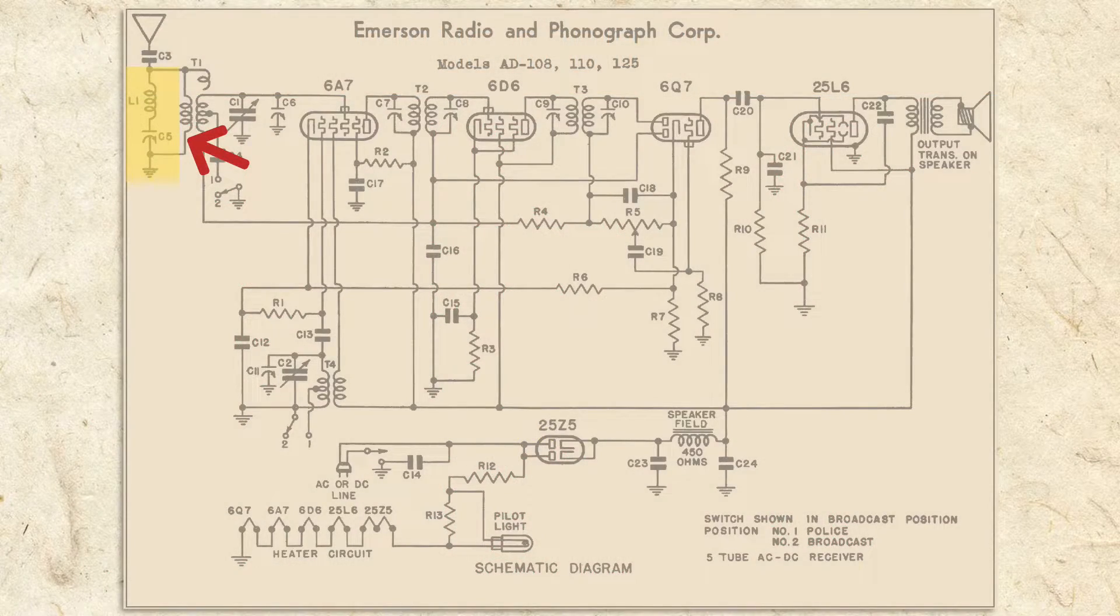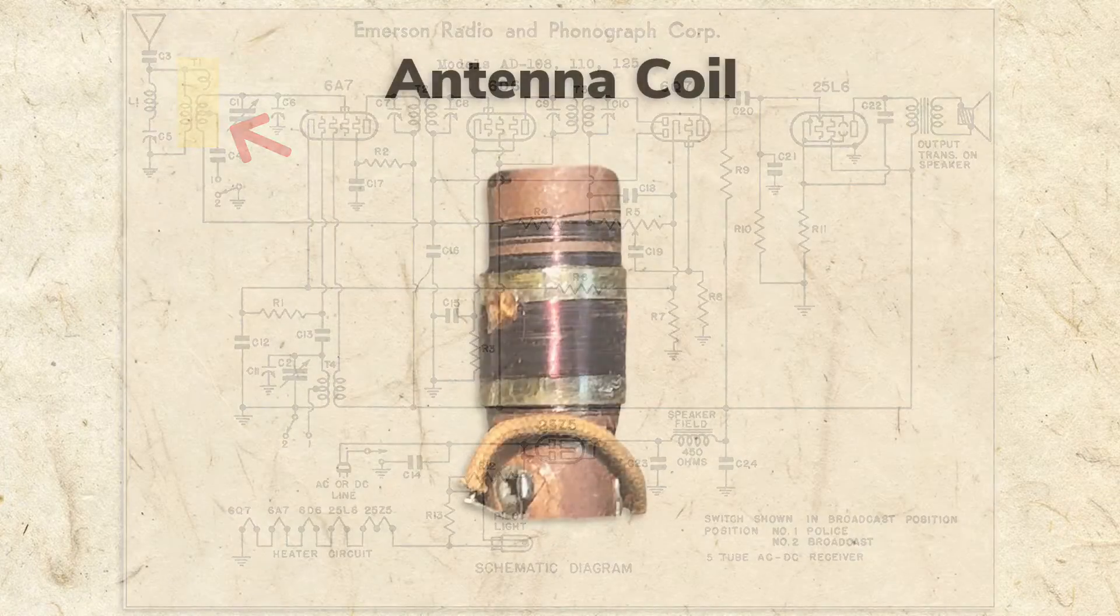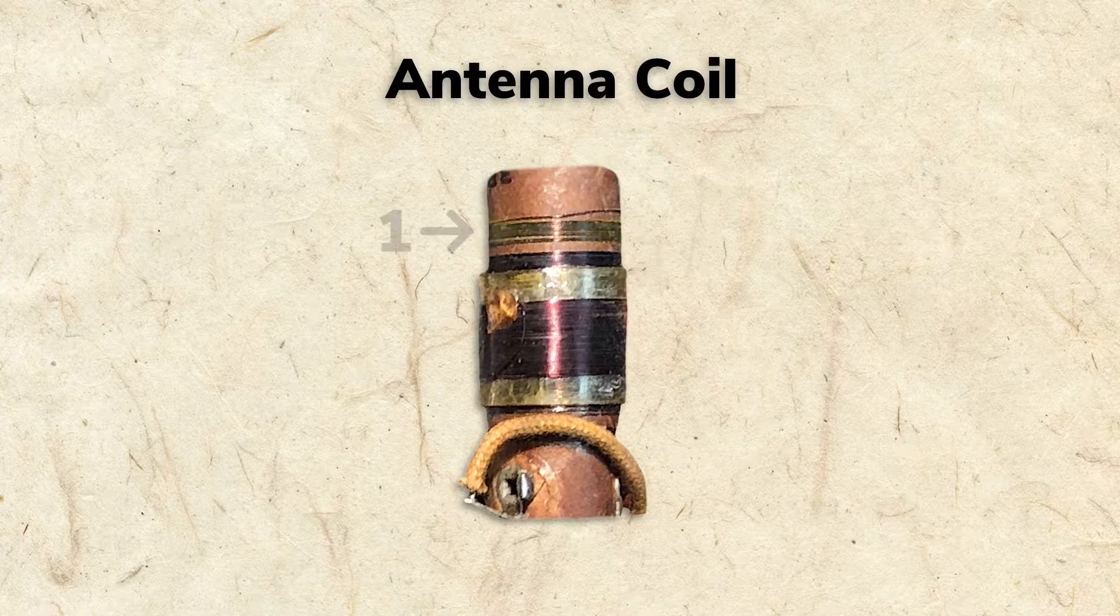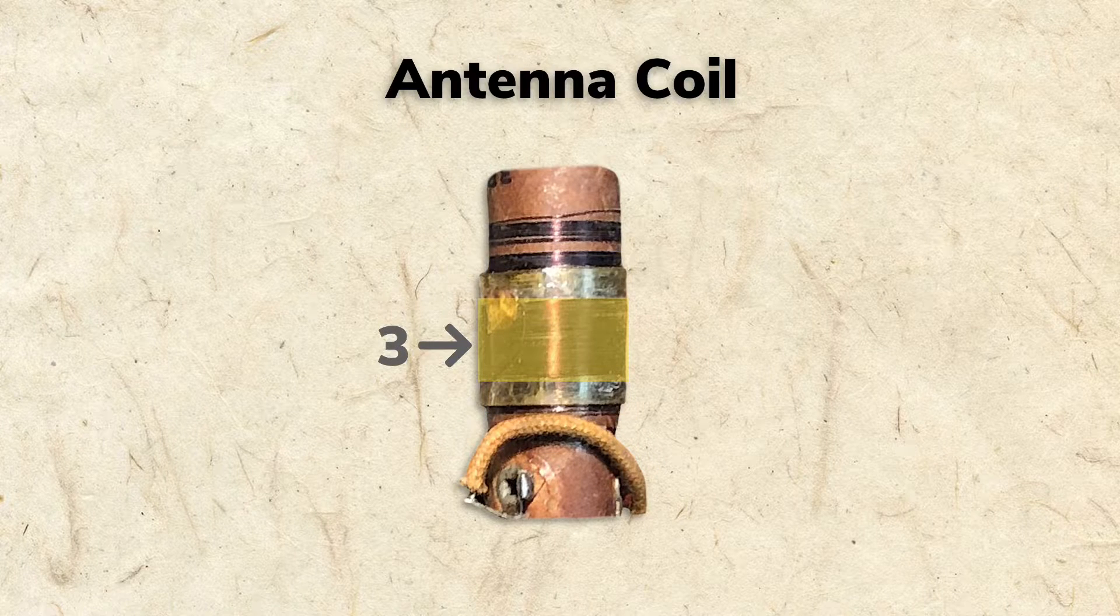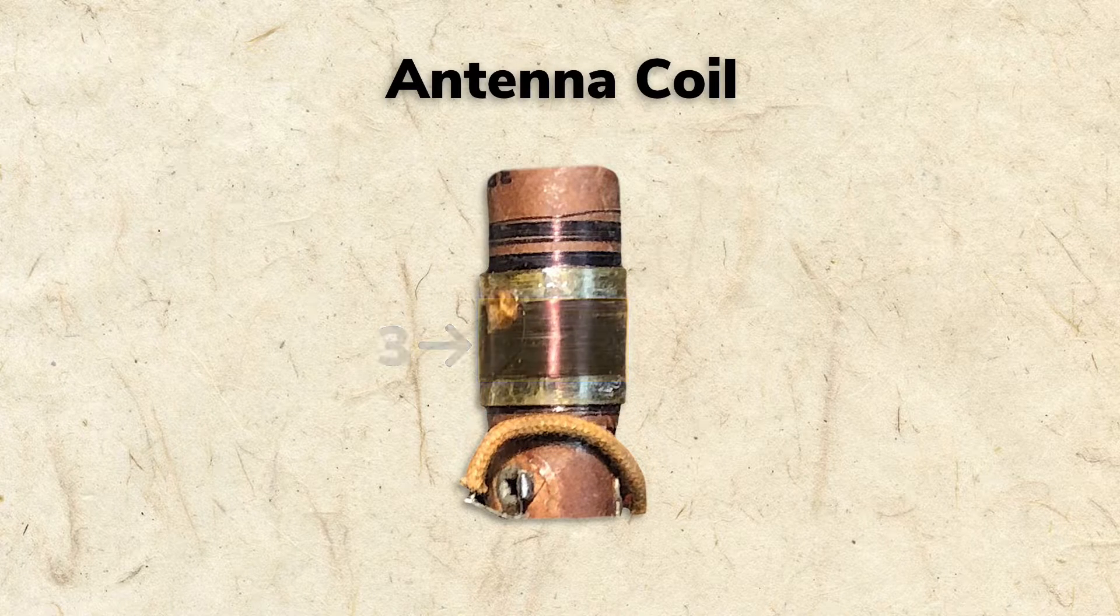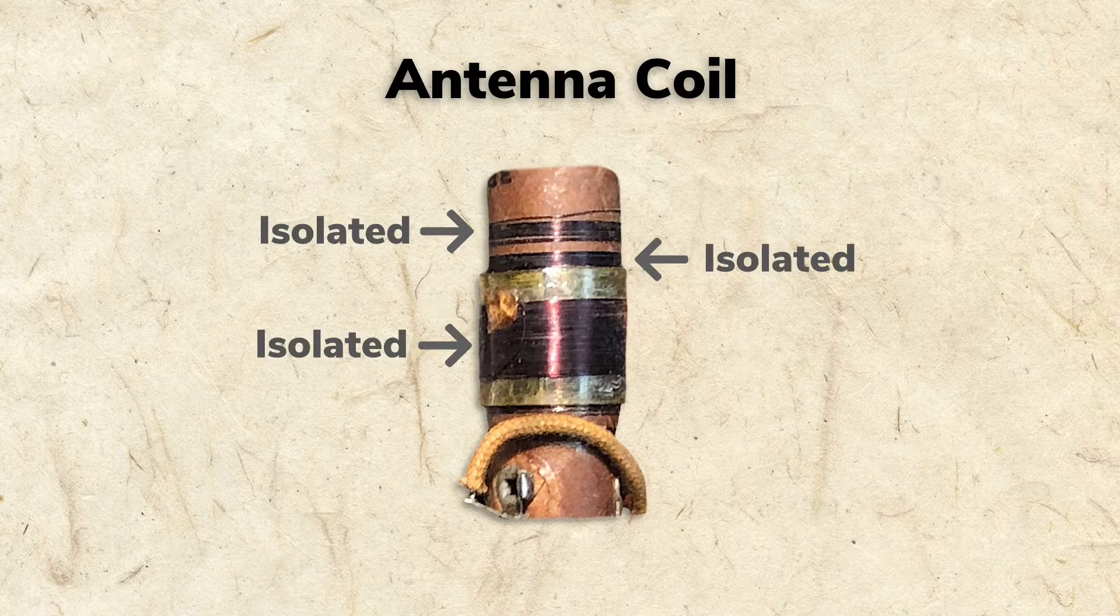After being filtered by the wave trap, the antenna signal is fed to the antenna coil. Here's the antenna coil from our radio. It's actually one coil adjacent to a second, with a third coil wrapped around it. All the coils are very close, but they're electrically isolated from one another.